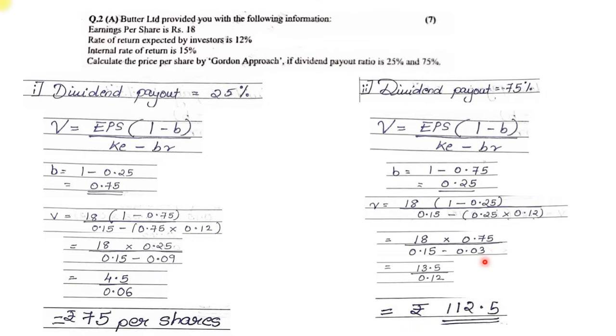This is how to solve the first question based on Gordon's approach - question 2A. Now moving to question number 2B: Akshire Limited is considering new projects for investment. There are two alternative investment proposals - Project Red and Project Blue. The cost of each project is estimated to be 75 lakhs, and four years of cash inflows are given.